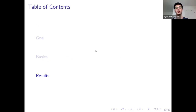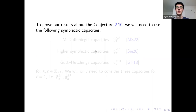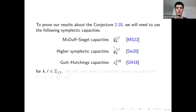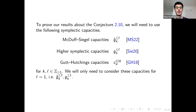In the last section of the talk, I will explain the results I have proven concerning this equality and also show some proof sketches. These results will make use of other symplectic capacities. First, I will use the Macduff-Siegel capacities, which are a family of capacities parameterized by two positive integers k and l. I will also use Siegel's higher symplectic capacities, and the Gutt-Hutchings capacities, which are also parameterized by a positive integer k. I will actually only use these capacities in the case l equals 1.